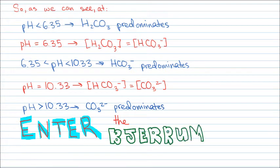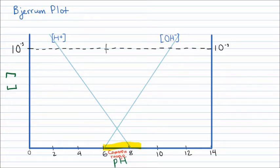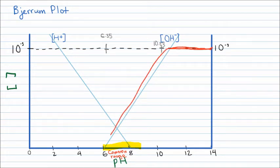We can plot these on a Bjerrum plot, which has concentration on the y-axis and pH on the x-axis. The y-axis is in moles per liter, and the proton and hydroxide ion concentrations at different pHs are already plotted. The highlighted pHs show the typical pH range of natural waters. Let us mark the plot at pHs 6.35 and 10.33. It is important that we are giving Ct, or C total, a value of 10 to the negative 3 molar. At pHs above 10.33, we assume carbonate is the dominant species, and bicarbonate and carbonic acid are negligible, so we plot a straight line of carbonate molarity equaling C total.